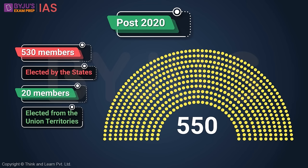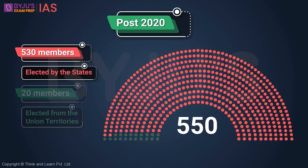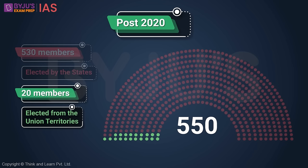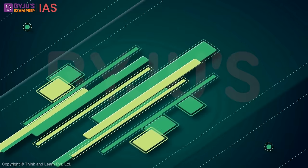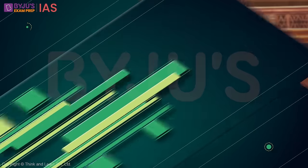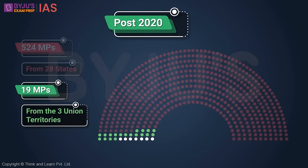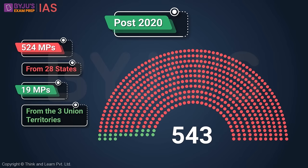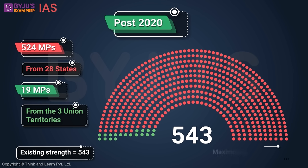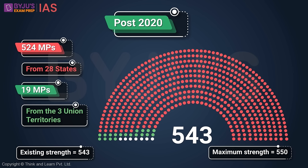With 530 elected by states and 20 from Union territories, there are now 524 MPs from states and 19 MPs from Union territories, giving a total existing strength of 543 MPs. So the current strength of Lok Sabha is 543 and the maximum strength is 550, compared to 552 prior to 2020.